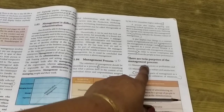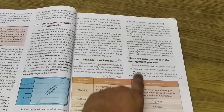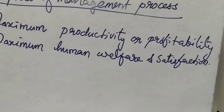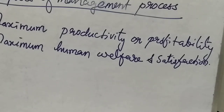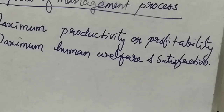What is the purpose of the management process? There are two purposes. The first one is maximum productivity or profitability. The second one is maximum human welfare and satisfaction. They want to maximize production in order to increase profitability. They also want to provide welfare activities to the social people and satisfy human wants and needs. These are the two main purposes of managing the process.